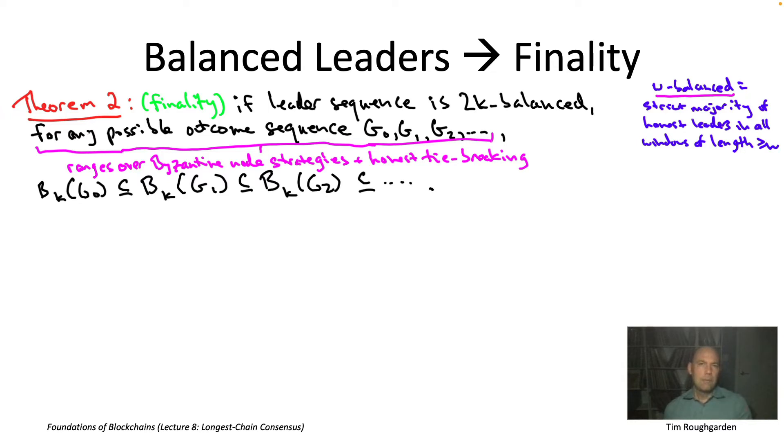So remember, there's really two types of consistency. One type is consistency between different honest nodes. That part, turns out that's not the hard part, really, of analyzing longest chain consensus, and so we've sort of assumed it away. And the hard part is actually self-consistency. Consistency with your future self. That's what's really kind of at risk in longest chain consensus, and that self-consistency is exactly the promise of this theorem two.